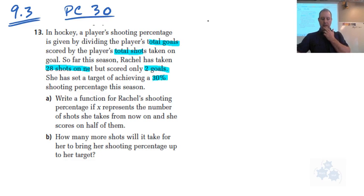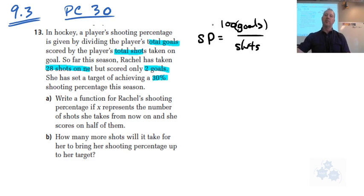So the shooting percentage is the number of goals divided by the number of shots, times 100. We can put that 100 anywhere, in the back or on the top there. That's going to be the shooting percentage in percent.